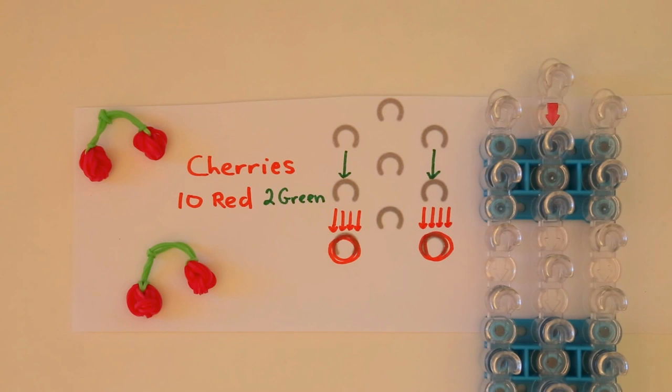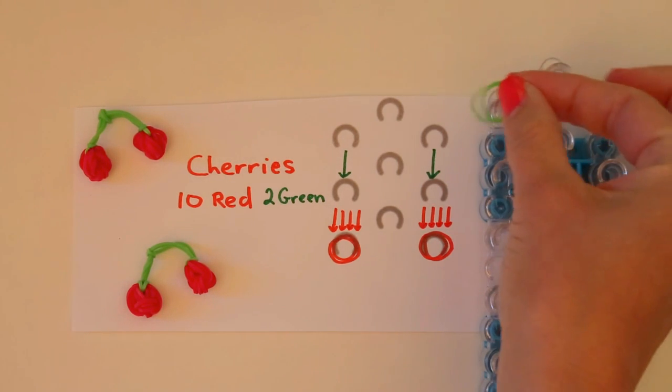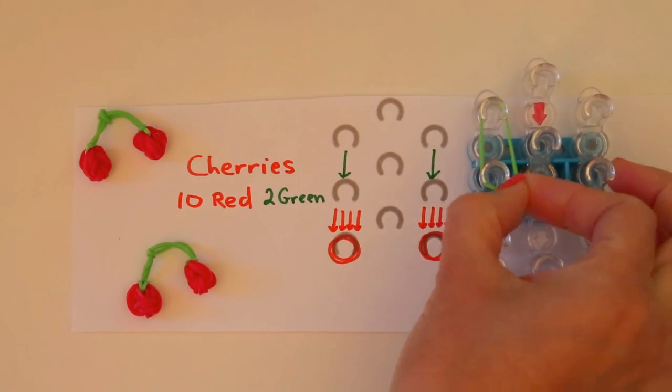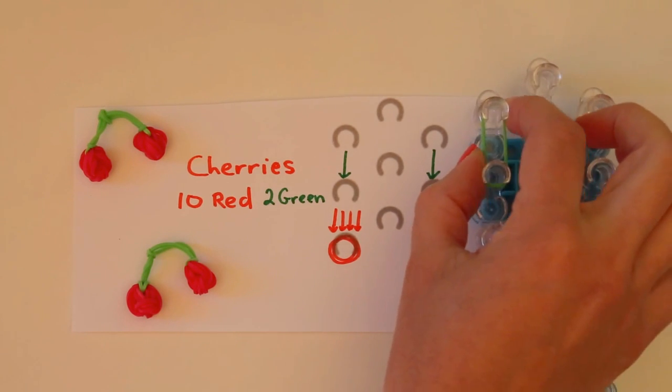To make the cherries you'll need ten red rubber bands and two green rubber bands. Starting with a single green rubber band, we're gonna bring that from the side with the arrow straight down one.